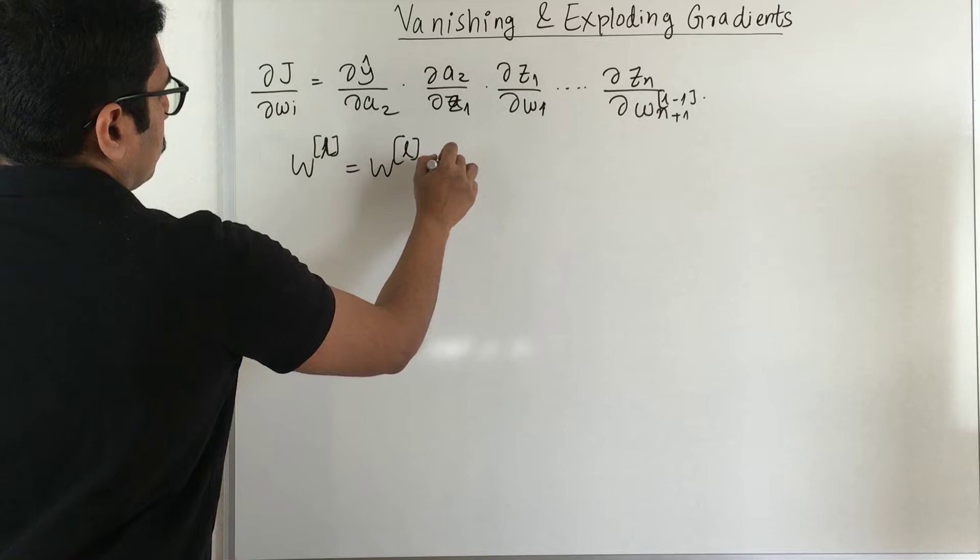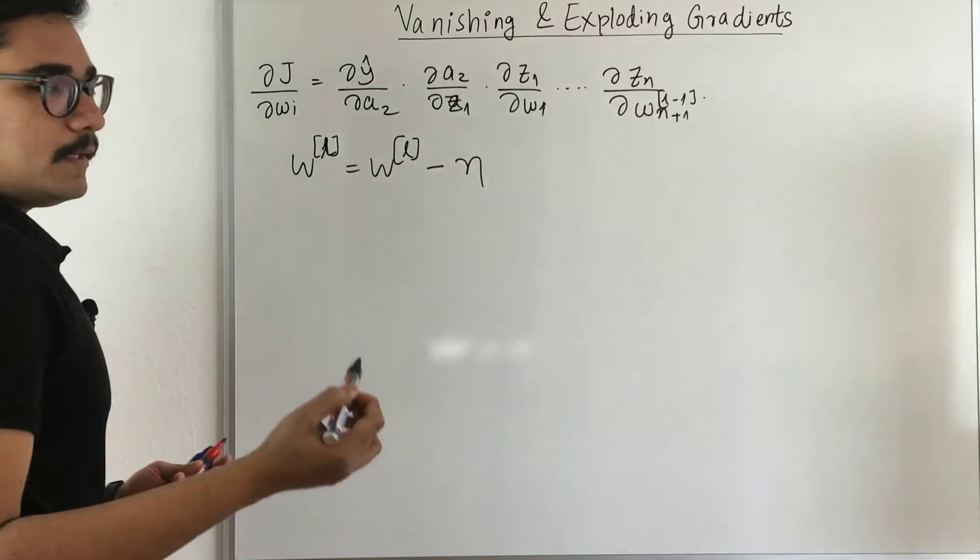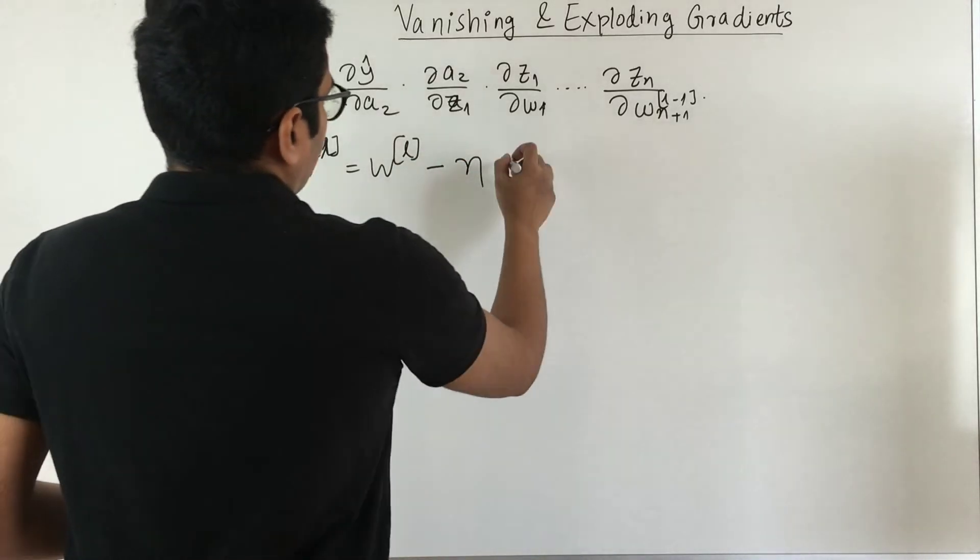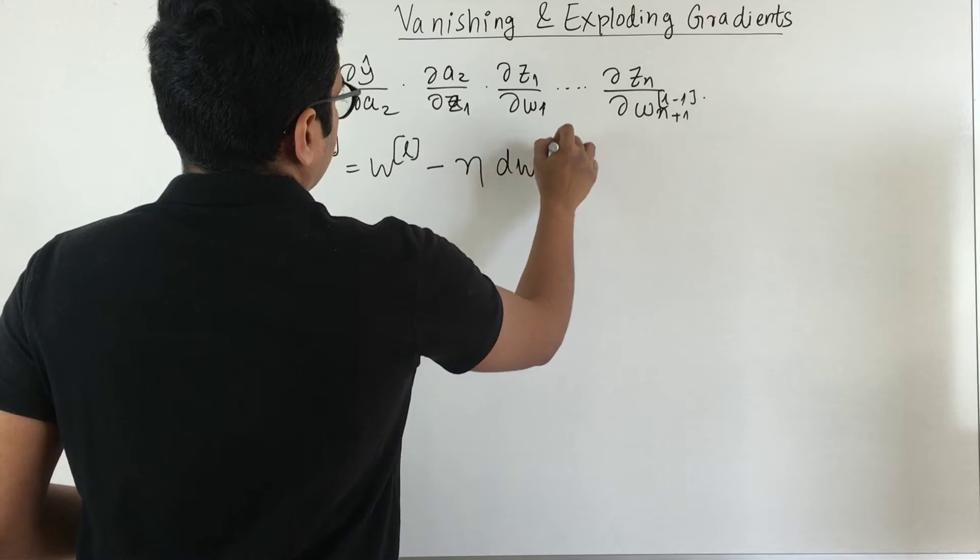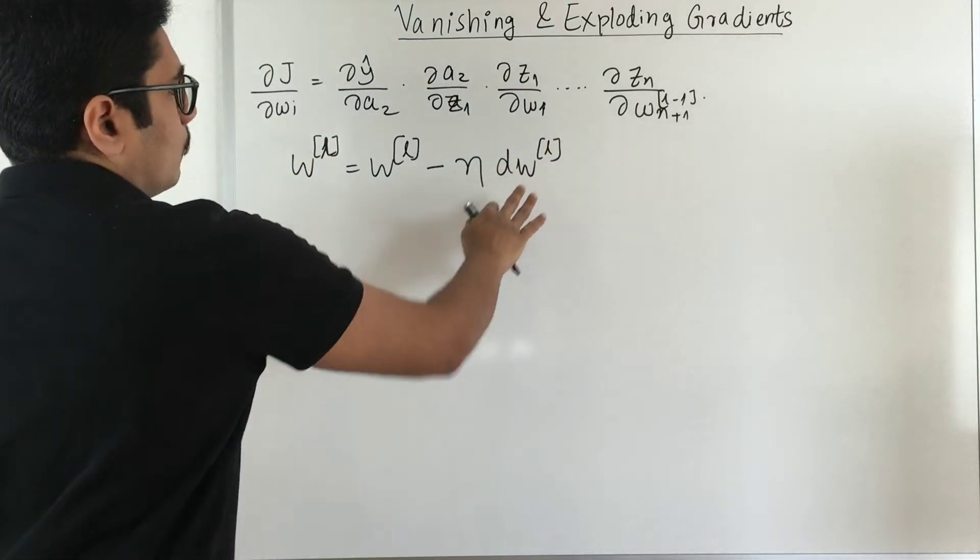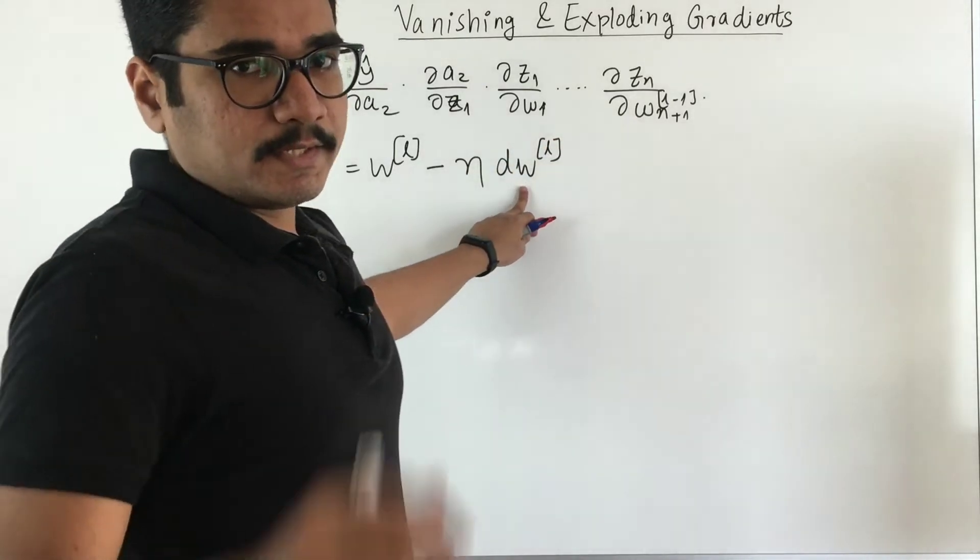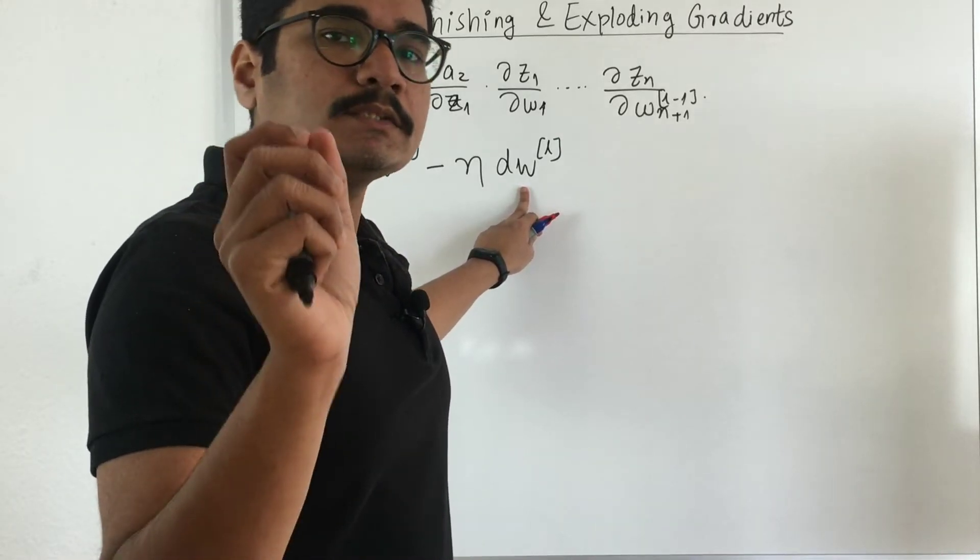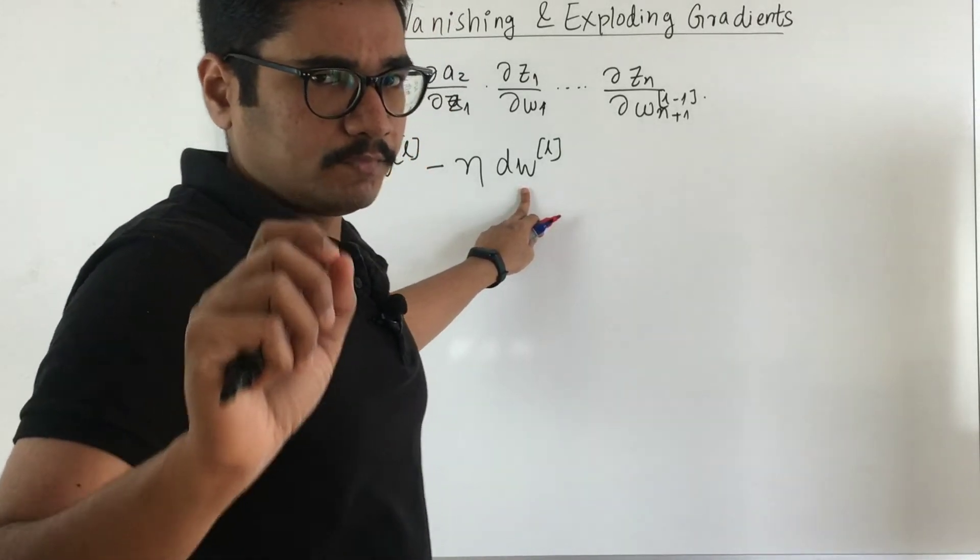That is the old weight minus we have some learning parameter that is eta, and we have dW at that layer. So this is a compact representation of our weights that we represent in matrix form, for the derivative of each of the weights.